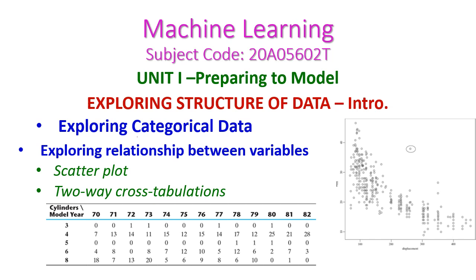In today's machine learning class, we will be exploring categorical data, which is the extension of exploring the structure of data. In the previous class, we have seen exploring numerical data as well as box plots and histograms for visualizing numerical data. Today we will see exploring categorical data, including what categorical data is and the relationship between variables using scatter plots and two-way cross-tabulation.